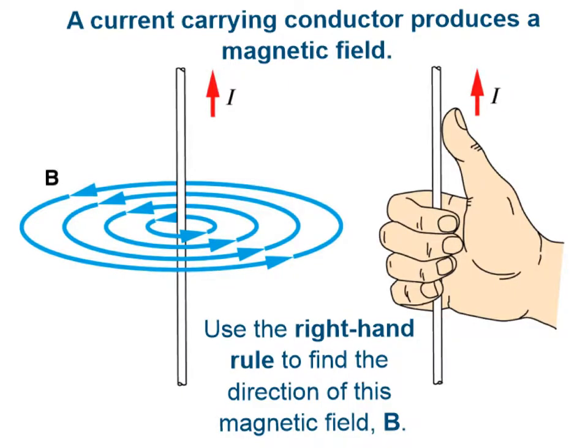So as we just showed in the previous picture, a current carrying conductor is going to produce a magnetic field, and the magnetic field that is produced is going to be a circle around this current carrying wire.